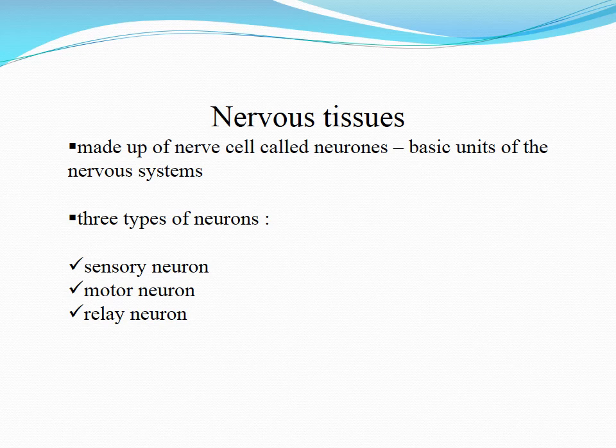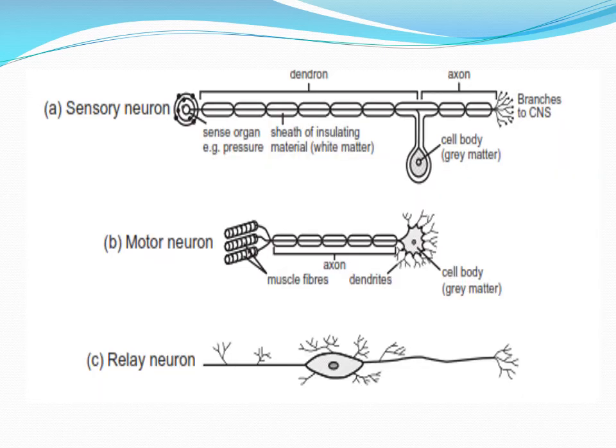Nervous tissue is made up of nerve cells called neurons, which are the basic unit of the nervous system. There are three types of neurons: sensory neurons, motor neurons, and relay neurons. In the diagram you can see sensory neurons taking messages from sense organs and passing them through the dorsal root to the central nervous system. Motor neurons are present in the gray matter, taking messages and passing them to the effectors. Relay neurons are present between the sensory and motor neurons, connecting them to the central nervous system.